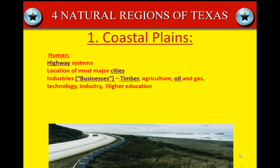The industries in the coastal plains — the main industries are timber, agriculture, oil and gas, and tech. The technology industry is big in Austin. And higher education as well. Most of your major, especially tier one colleges, are all going to be located in the coastal plains.